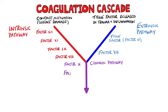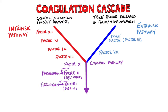Activated factor 10 causes prothrombin to become active thrombin, known as factor 2, which then cleaves fibrinogen into fibrin, also known as factor 1, and ultimately leads to clot formation. Factor 5 is a cofactor, while the other factors are enzymatically active, and activated factor 5 is needed alongside calcium for activated factor 10 to convert prothrombin into thrombin.